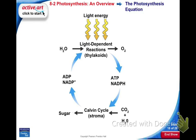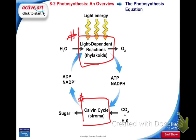Now that you have this diagram, we're going to talk about the two parts to the process of photosynthesis. Step number one is called the light dependent reactions. Part number two is called the Calvin cycle. First we're going to talk about part number one — the light dependent reactions.